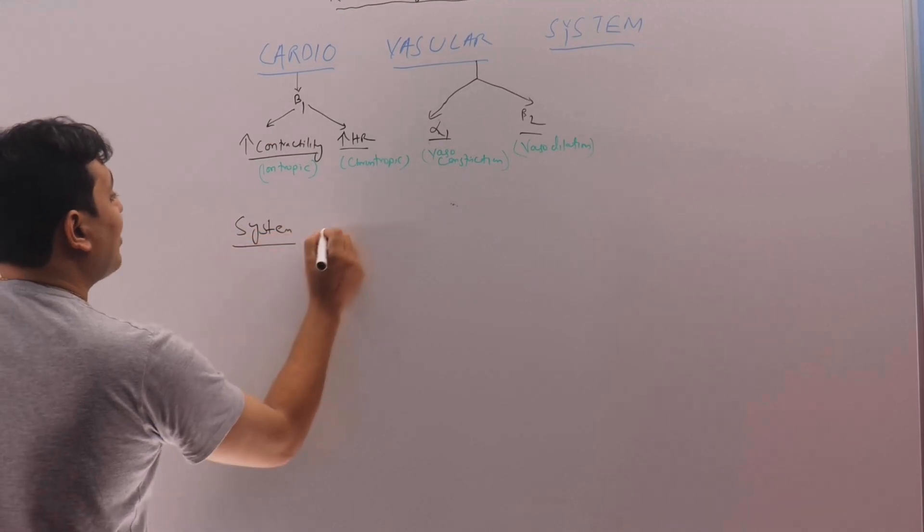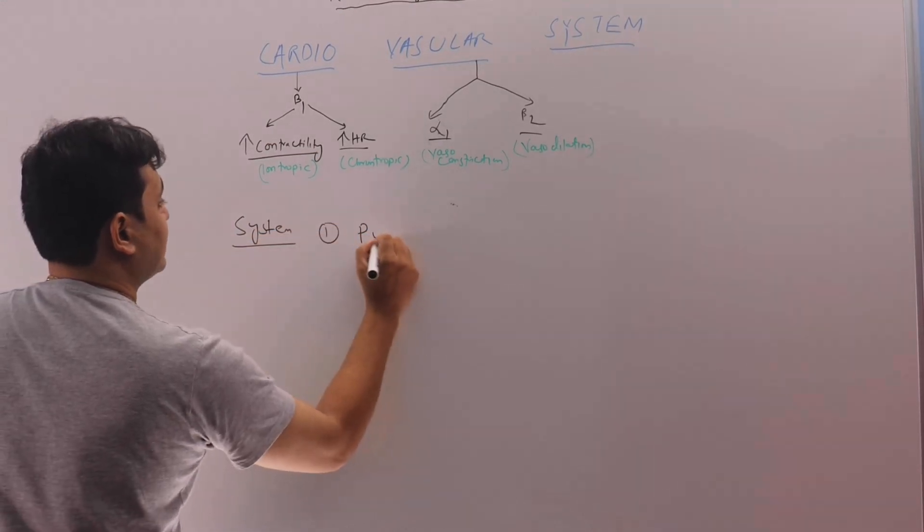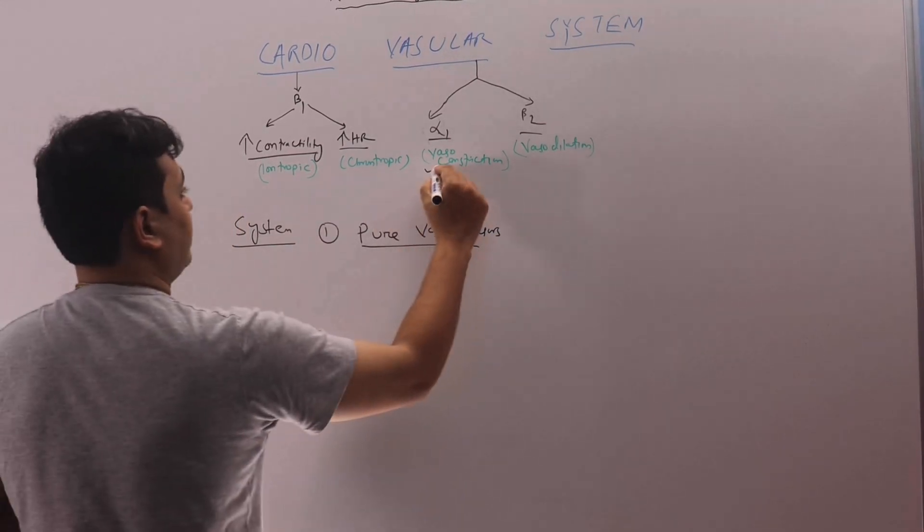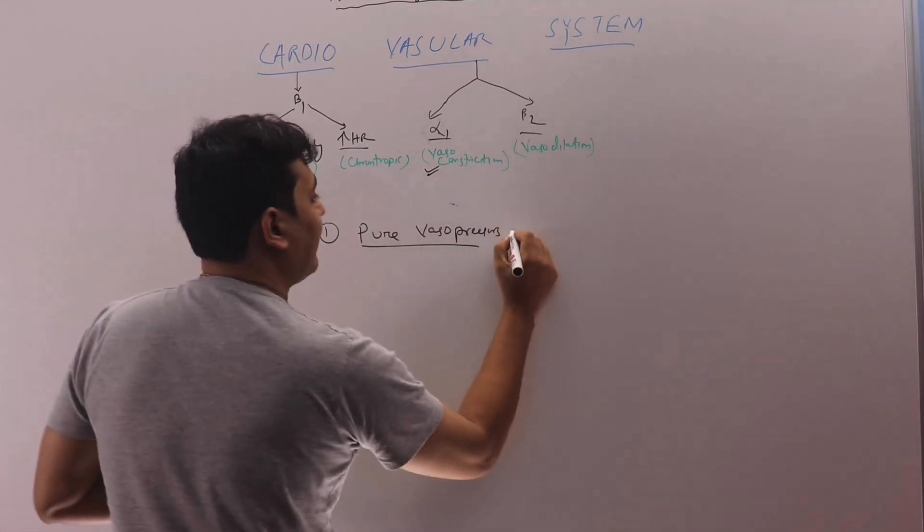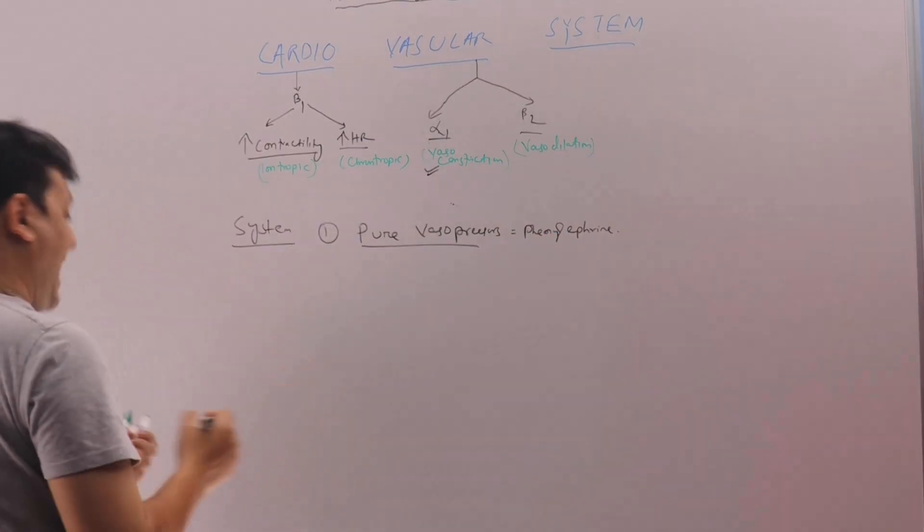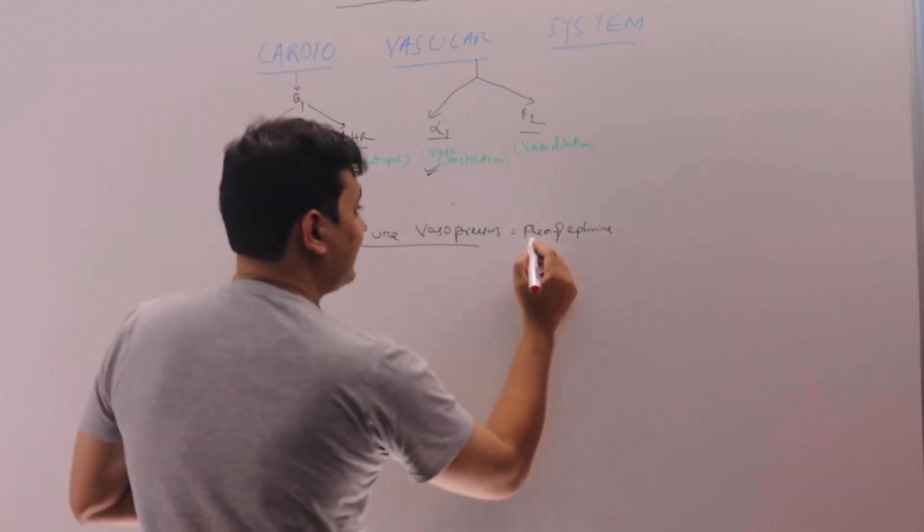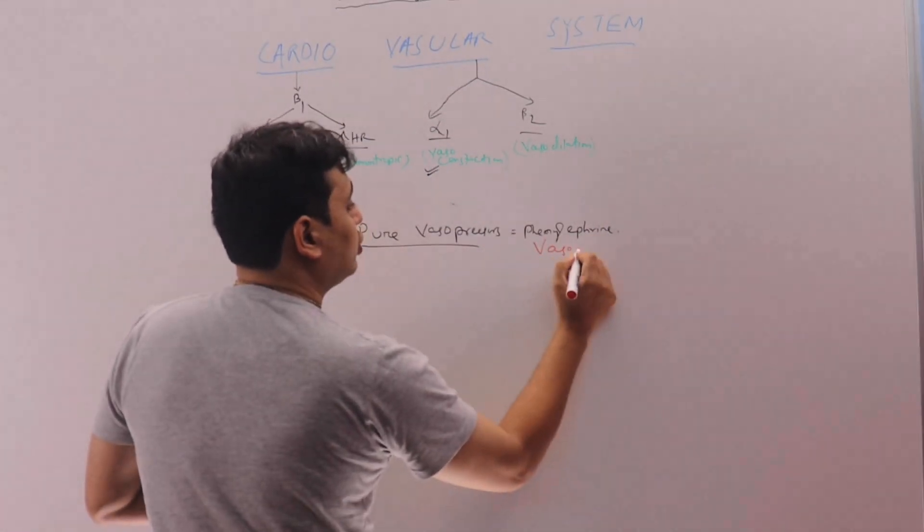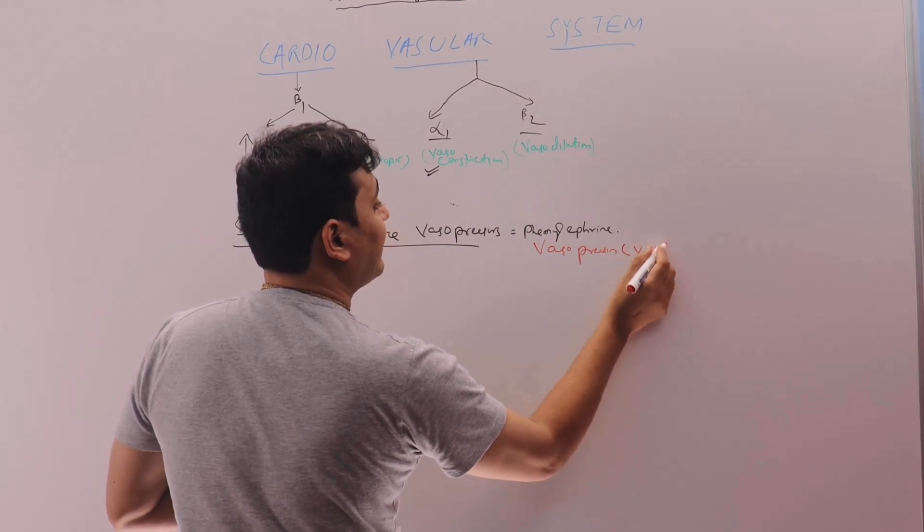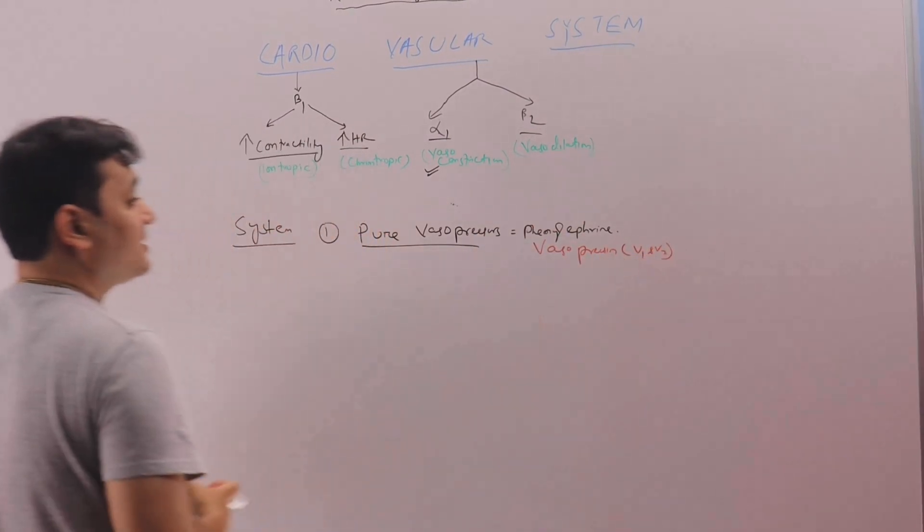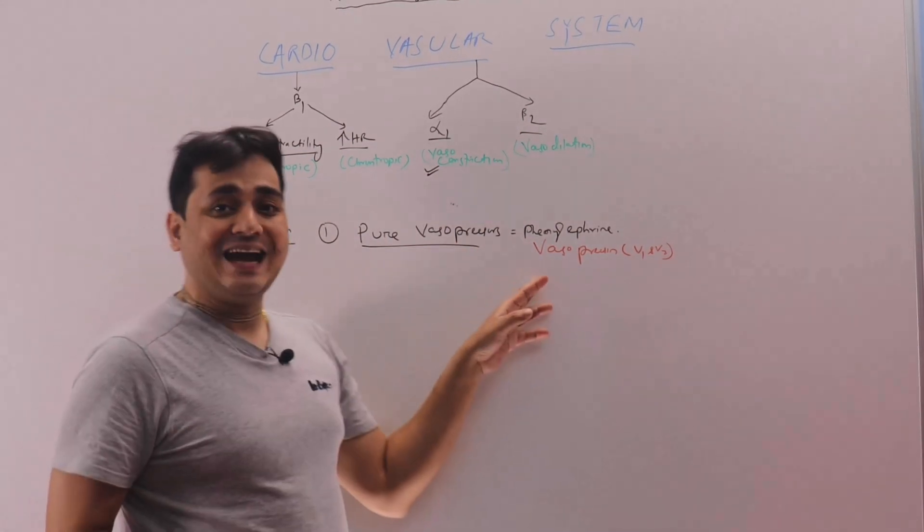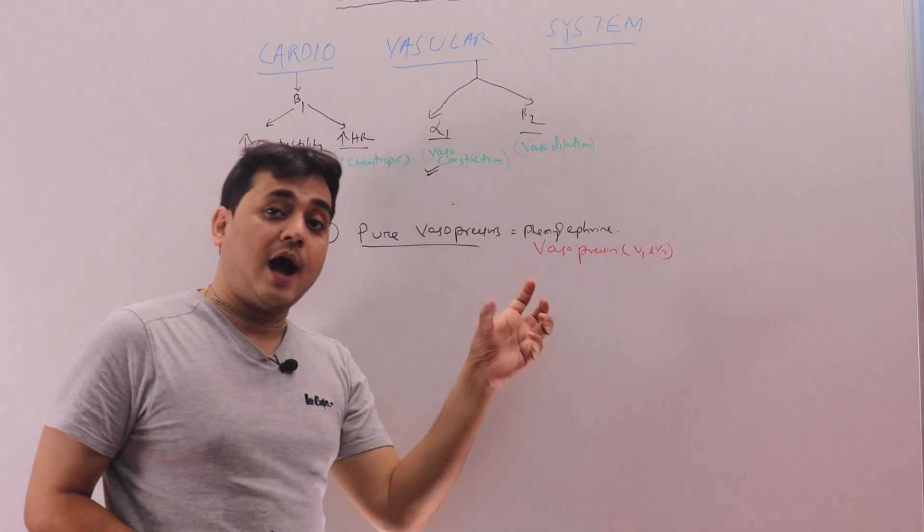Number 1 will be pure vasopressors. That means they only do vasoconstriction. We have phenylephrine. Also we have vasopressin. It acts through V1 and V2 receptor, separate receptors. But it is a pure vasopressor. They do not have any activity whatsoever on the heart.